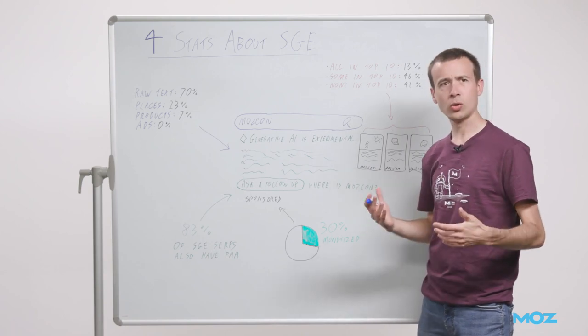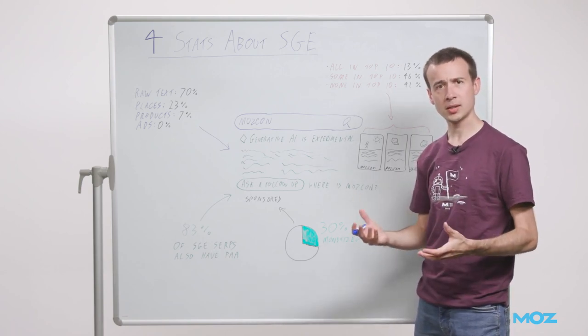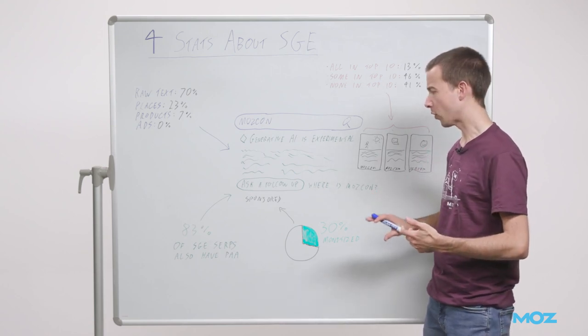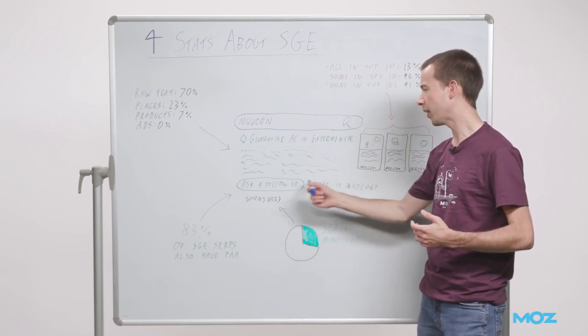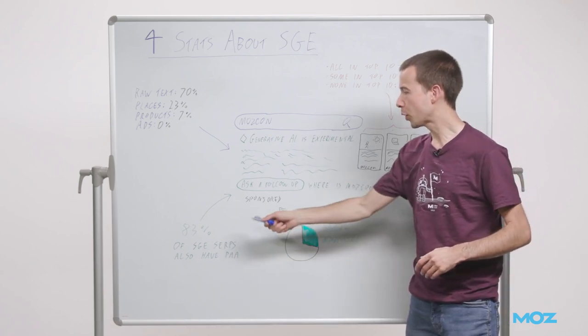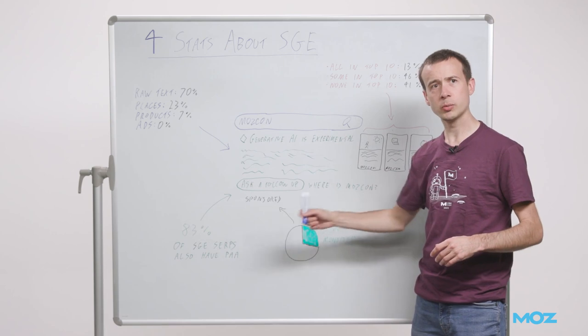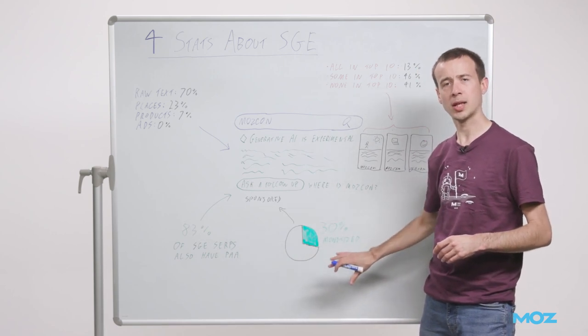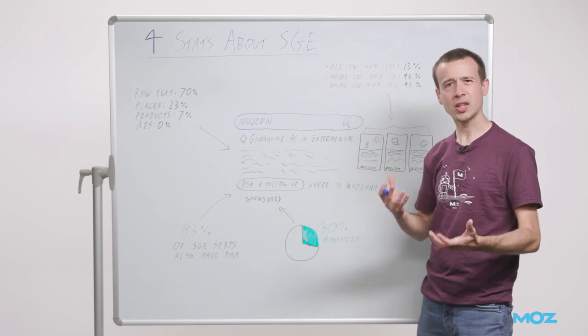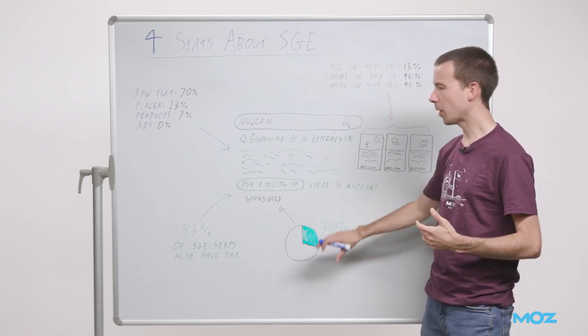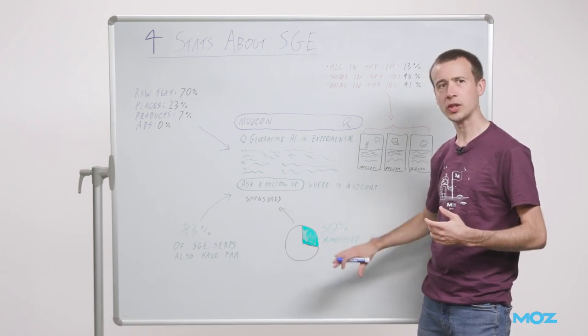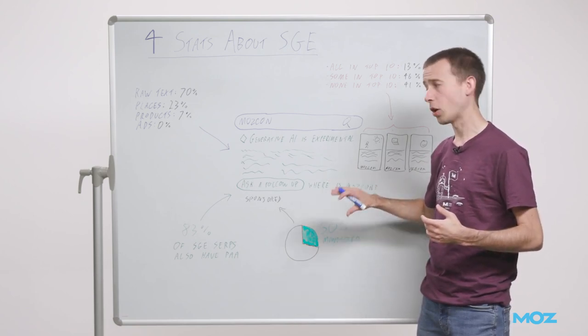I think it's very un-Google-like to have duplicated functionality like this. You've got two SERP features essentially doing the same thing - both a People Also Ask box further down and these questions, often even the same questions. In 83% of SGE SERPs, there was also a People Also Ask feature, which makes me think they kind of rushed this. If they'd thought about it more, maybe they would have changed the SERPs beneath to not include overlapping features.